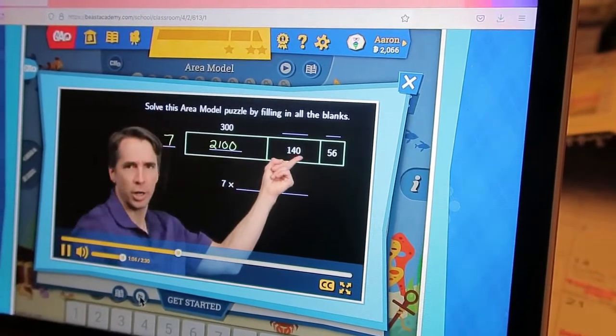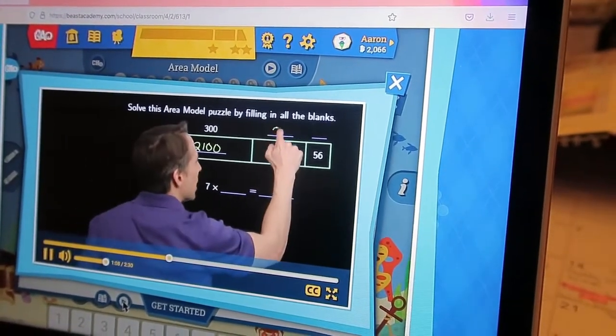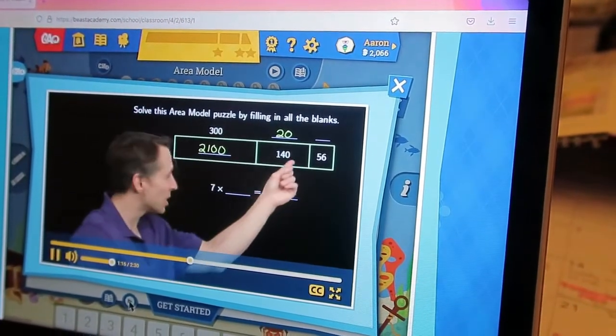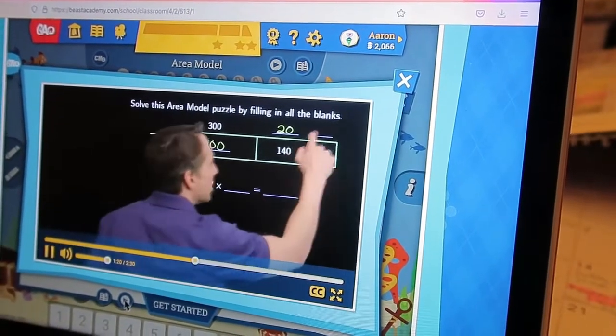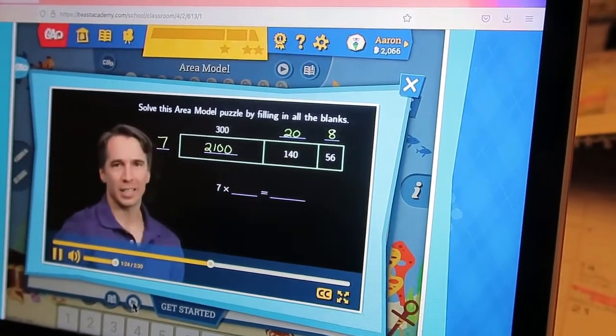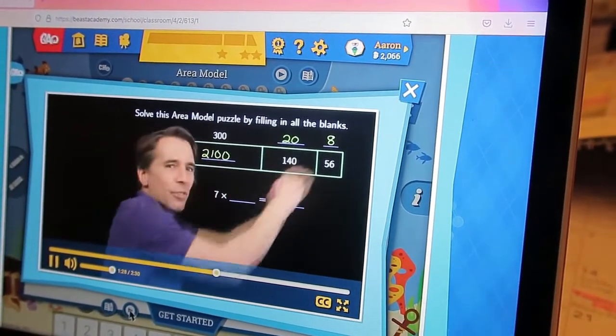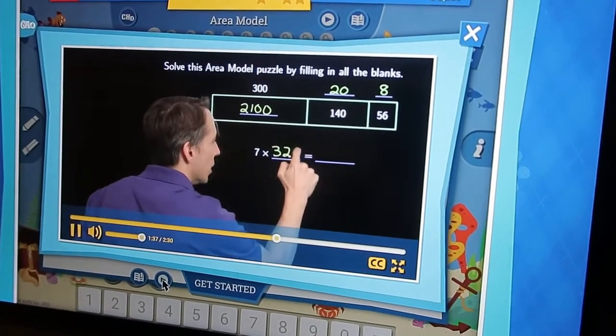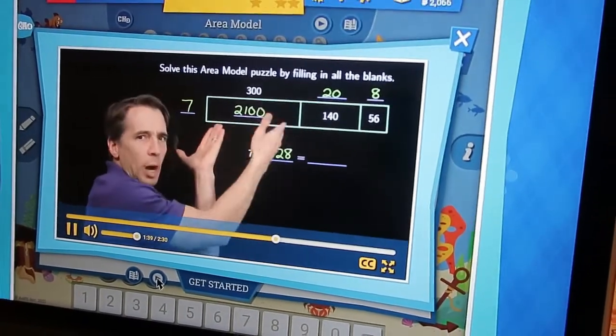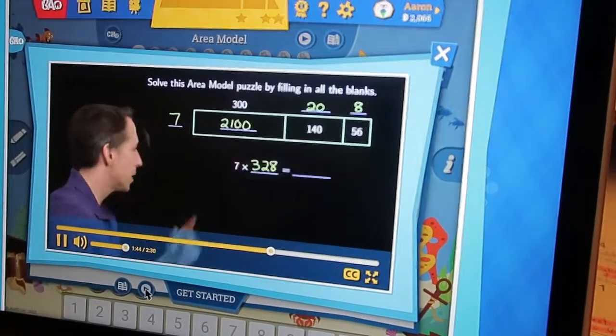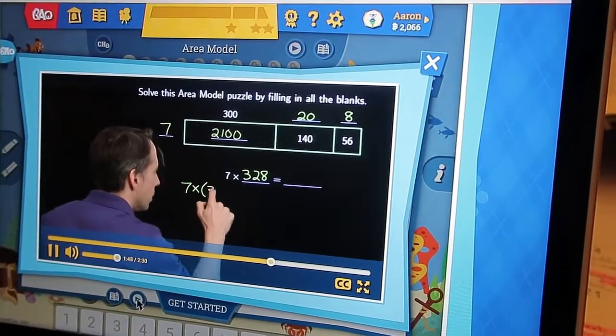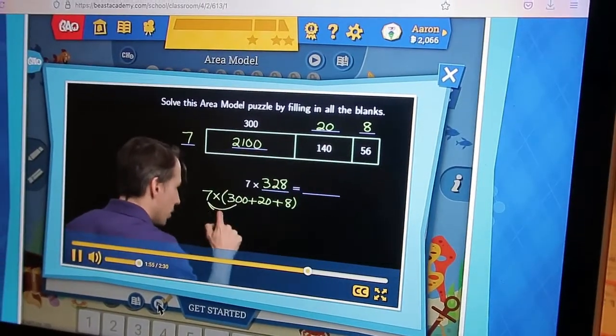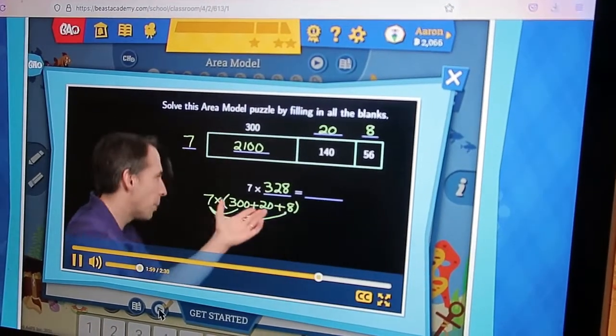And we know that its height is the same as the height here, it's 7. So 7 times something equals this 140. Well, 7 times 2 is 14, so it's 7 times 20 gives us that 140. And we have the same drill out here. The height is still 7, so 7 times something equals 56. Of course it's 7 times 8, it equals 56. So this blank has to be an 8. And now we have this whole dimension right here, we have the width: 300 plus 20 plus 8. So this whole picture here is giving us a visualization for 7 times 328, and we can see the distributive property happening right here.